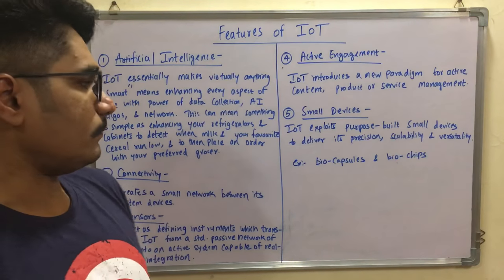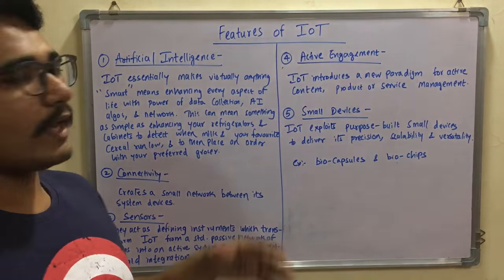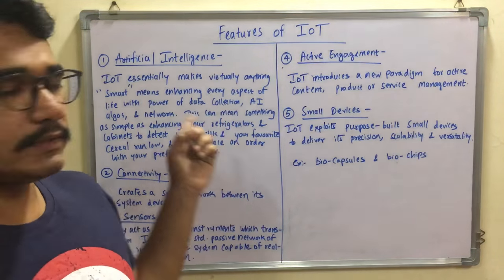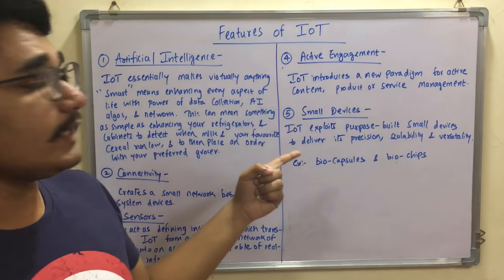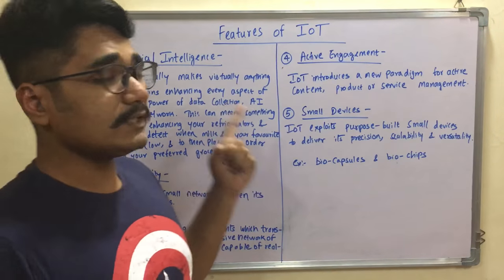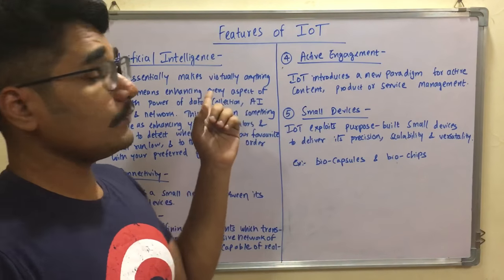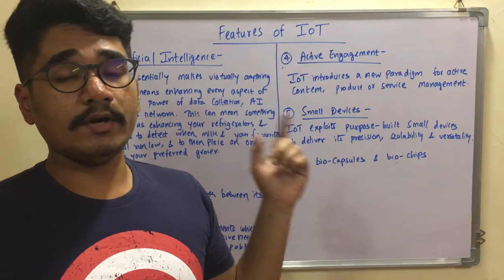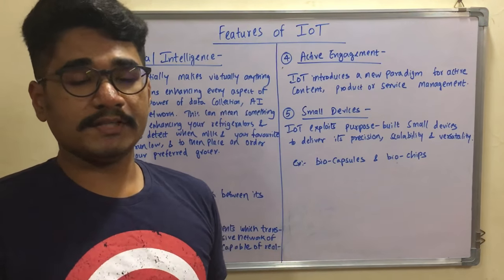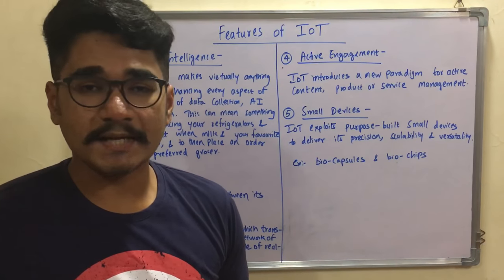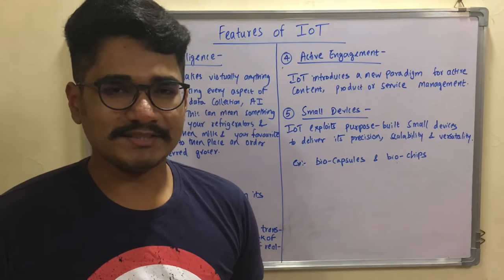To summarize, the five features of IoT are: Artificial Intelligence, Connectivity, Sensors, Active Engagement, and Small Devices. Hope you enjoyed this video and found it educational. Please give a thumbs up, and if you haven't subscribed to my channel yet, please subscribe. Thanks for watching.